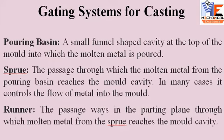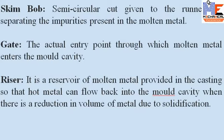Gating systems refer to all those elements which are connected with the flow of molten metal from the ladle to the mold cavity. The various elements connected with the gating system are: pouring basin, sprue, sprue base well, skim box, gate, riser, runner, strainer, etc.